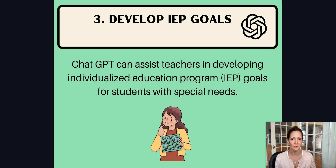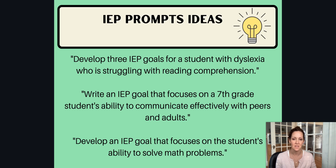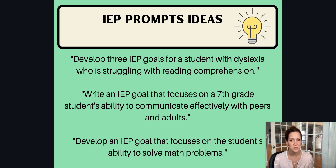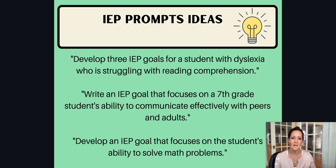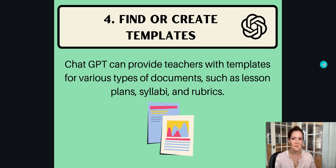IEP goals — another great prompt idea. ChatGPT can assist in developing goals for kids with specific needs. For example: develop three IEP goals for a student with dyslexia who's struggling with reading comprehension; write an IEP goal focusing on a seventh grade student's ability to communicate effectively with peers and adults; or develop an IEP goal focusing on the student's ability to solve math problems. Be specific about the student's needs and always include the age or grade.